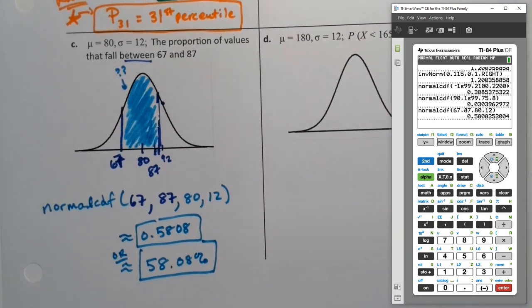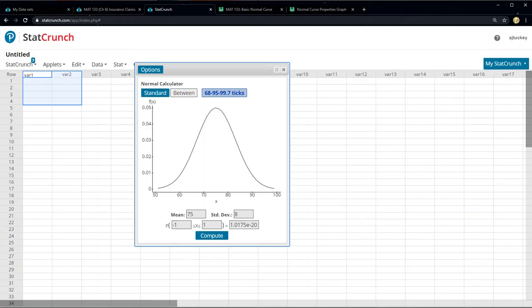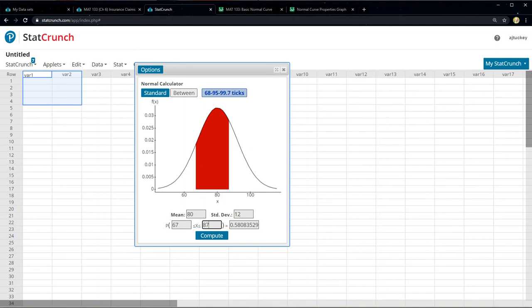Now the hardest one. Let me go grab StatCrunch real quick. Because that was a between one. So if I click between and say 80. And 12. And this one's a little bit different. Because then I would type 67 here. 87 here. And press enter. And it will tell me that it's 0.5808. And actually draw the picture for me. So it's a little bit different. Because you have to click the between piece.